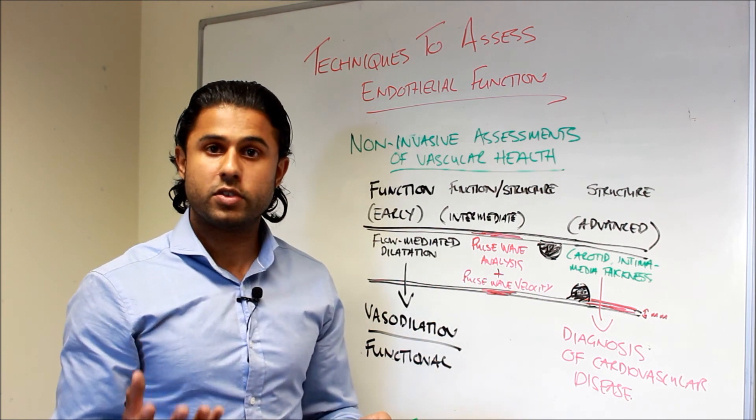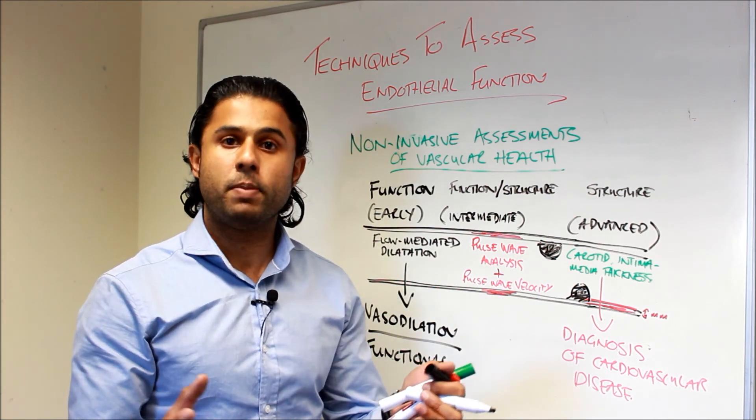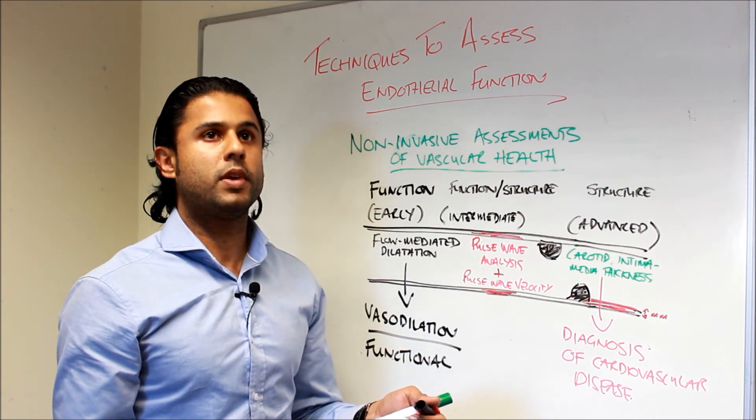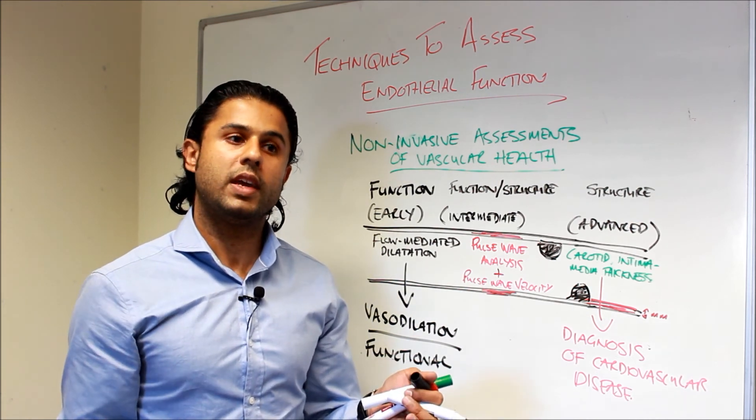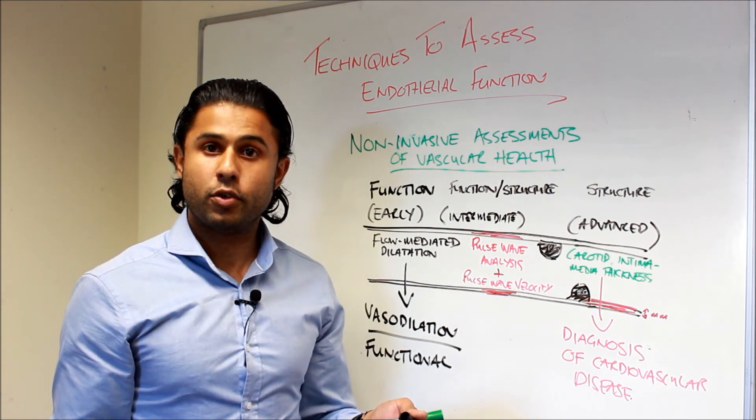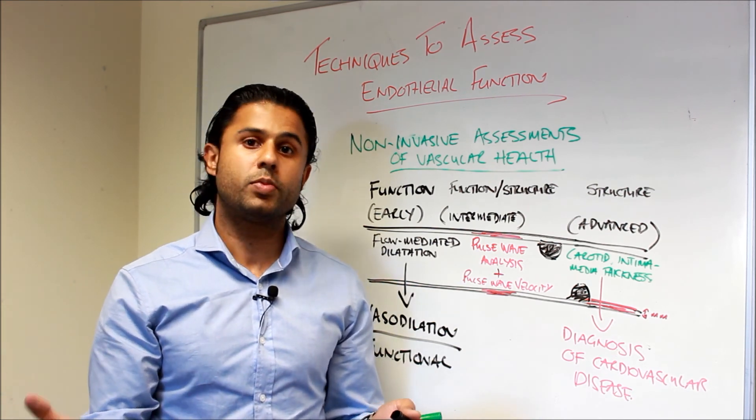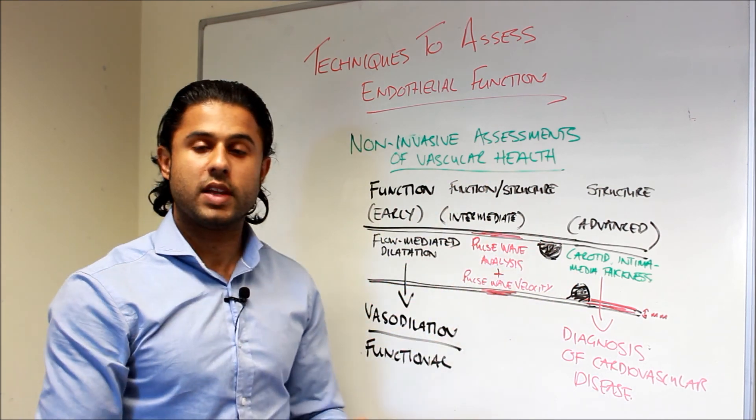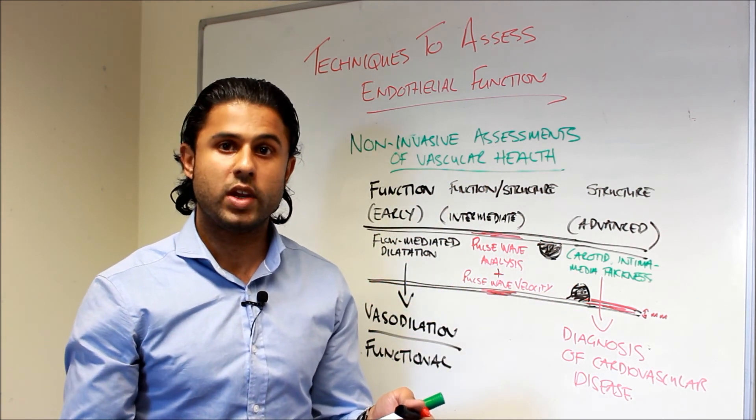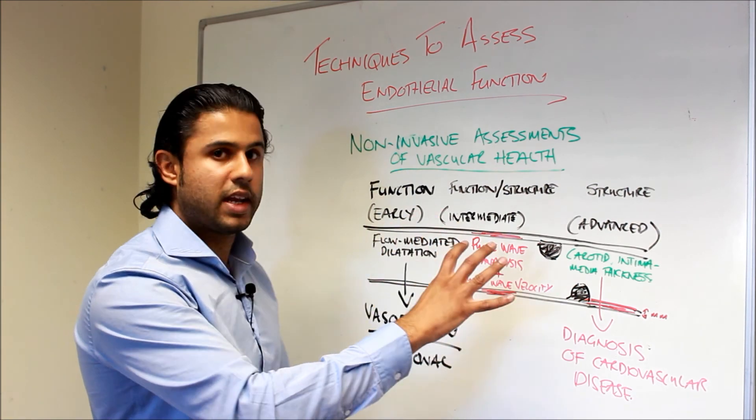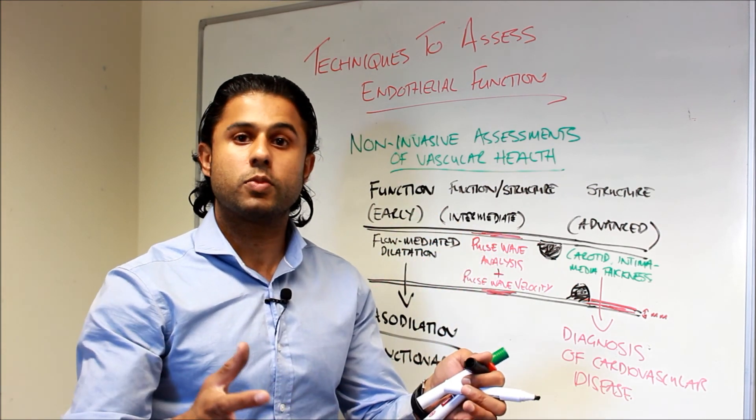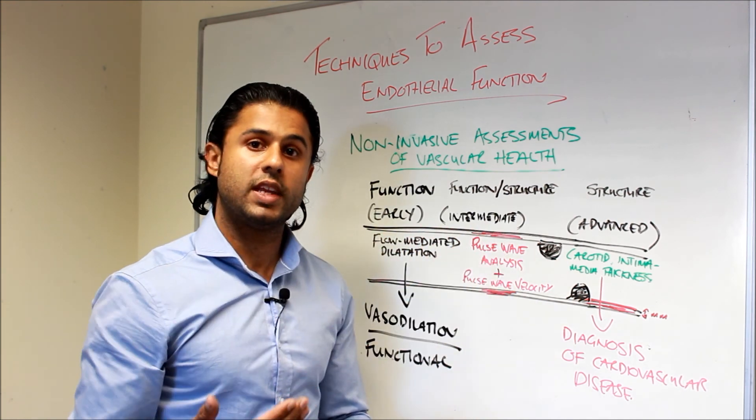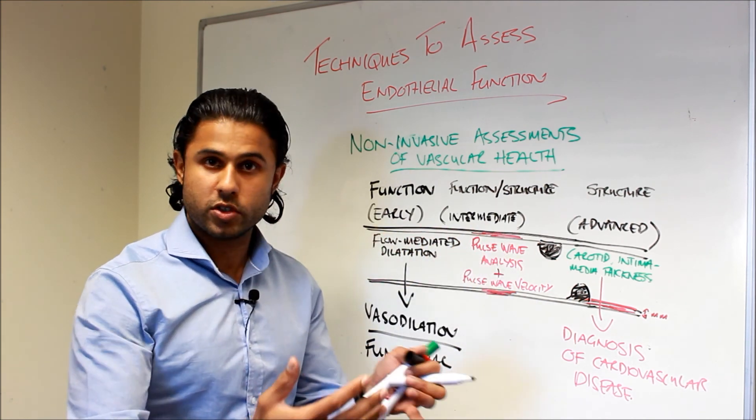They're used very commonly in a research setting to understand the impact of different interventions. For example, if I was going to give somebody an exercise program and I wanted to look at their vascular health, I wanted to see the effects of the exercise program on vascular health, then I would be able to utilize these assessments at baseline, start my patient on an exercise training program, measure these again, say two weeks, six weeks, 12 weeks later, and see what improvements I'm getting in response to the exercise training program and adjust as appropriate.